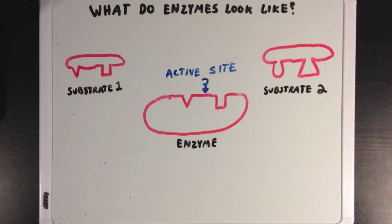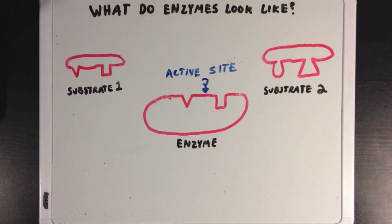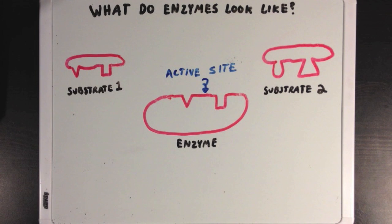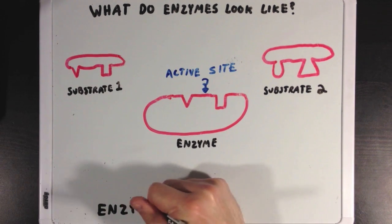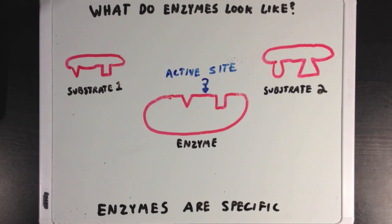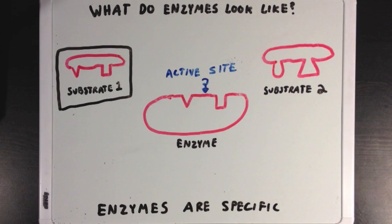Here, of the two substrates I've drawn, the enzyme will only be able to bind to substrate 1, since they fit together like puzzle pieces, whereas the shape of substrate 2 isn't going to fit nicely in the enzyme's active site. Because enzymes have unique active sites, we say that enzymes are specific to certain substrates, and by extension, certain reactions.